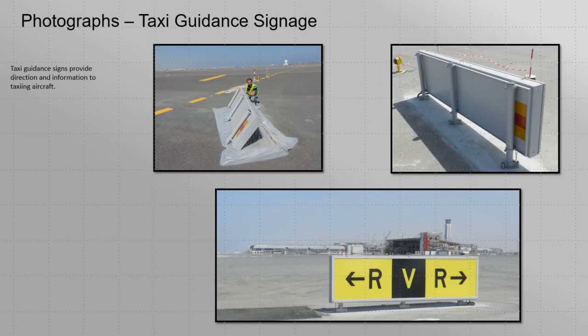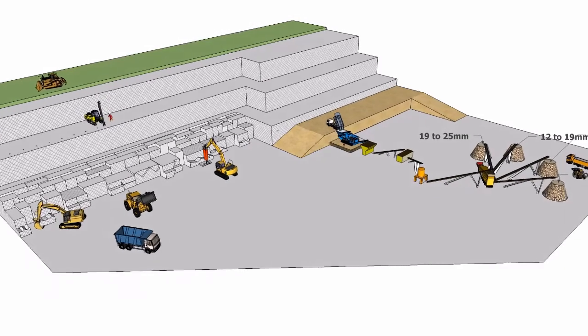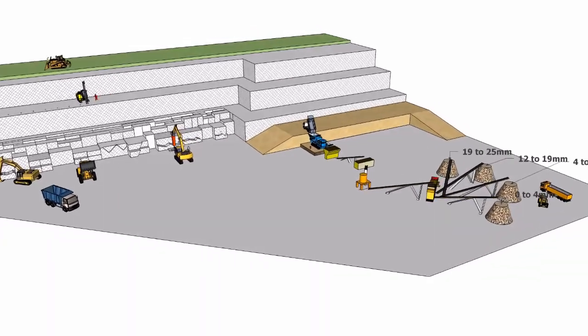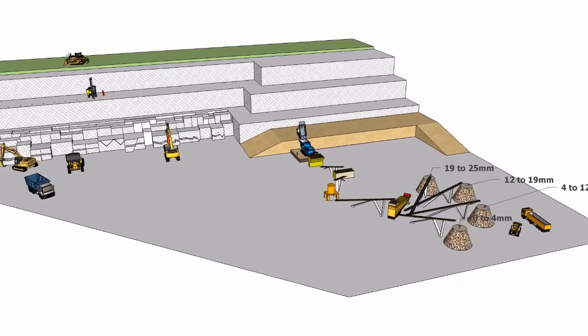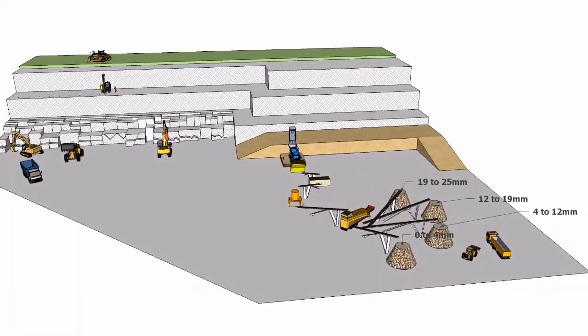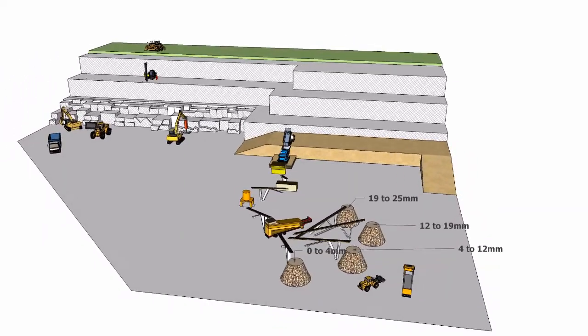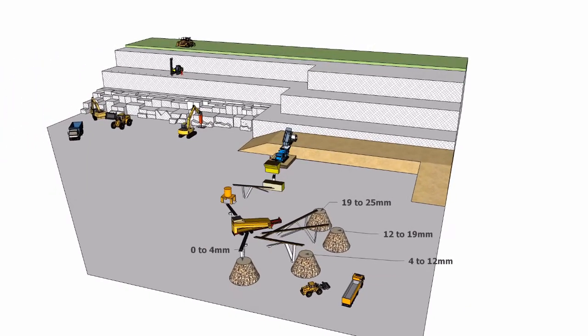Taxi guidance signs provide direction and information to taxiing aircraft. Quarry and aggregate production: rock is extracted by drilling and blasting.